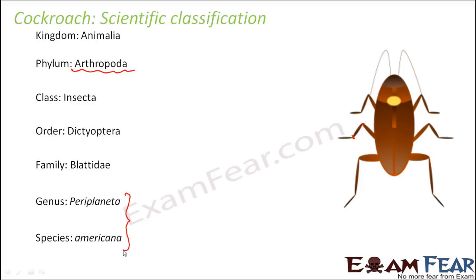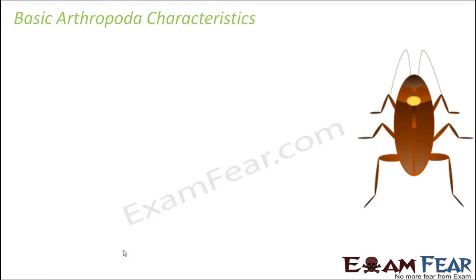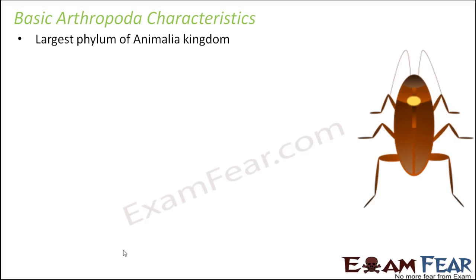Since cockroach belongs to phylum Arthropoda, let us look at the basic Arthropoda characteristics. Arthropoda is the largest phylum of the Animalia kingdom — it contains so many varieties of insects that it becomes the largest phylum.